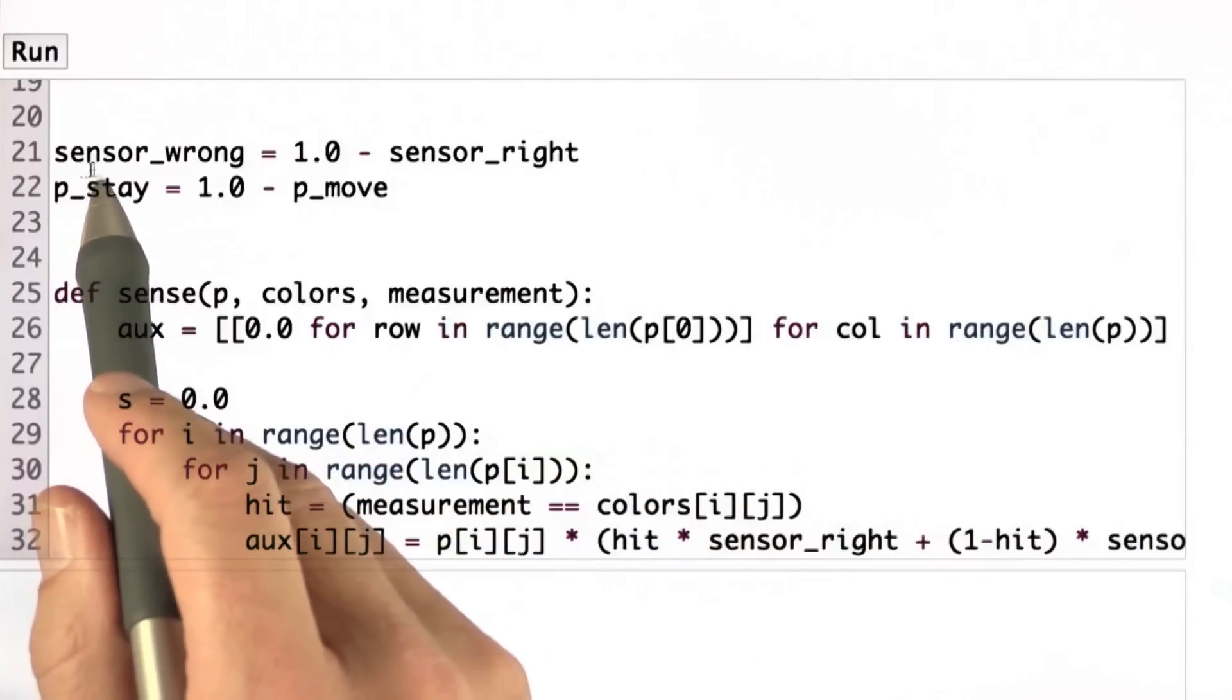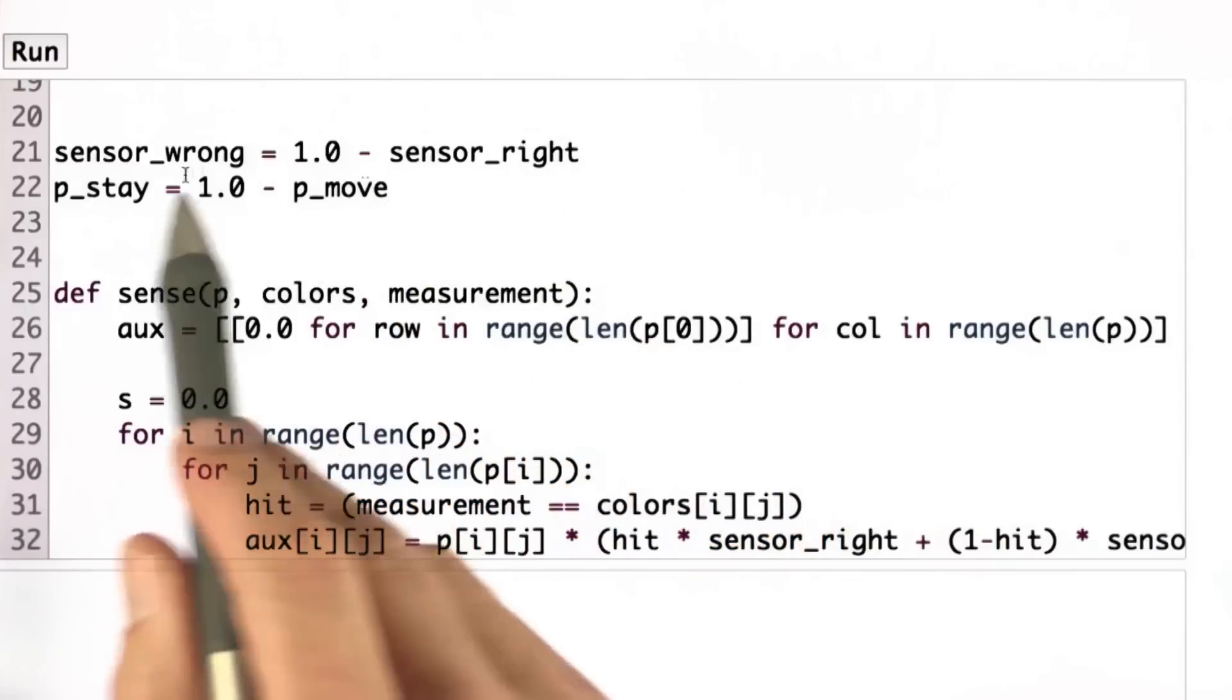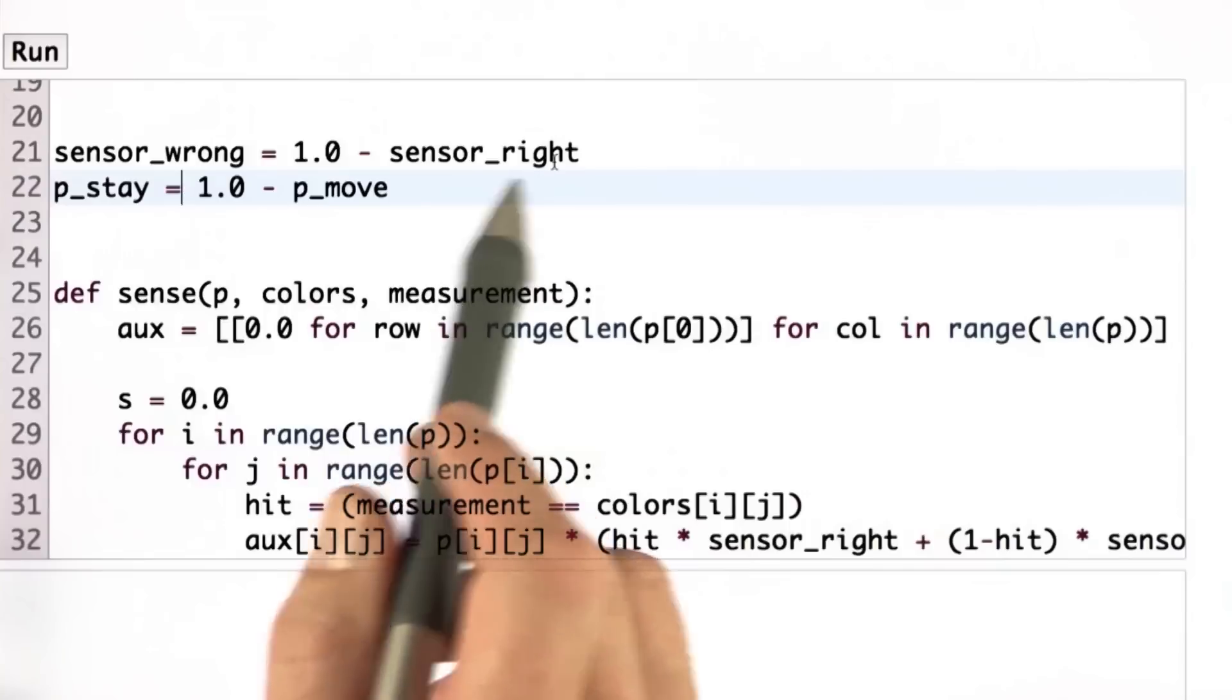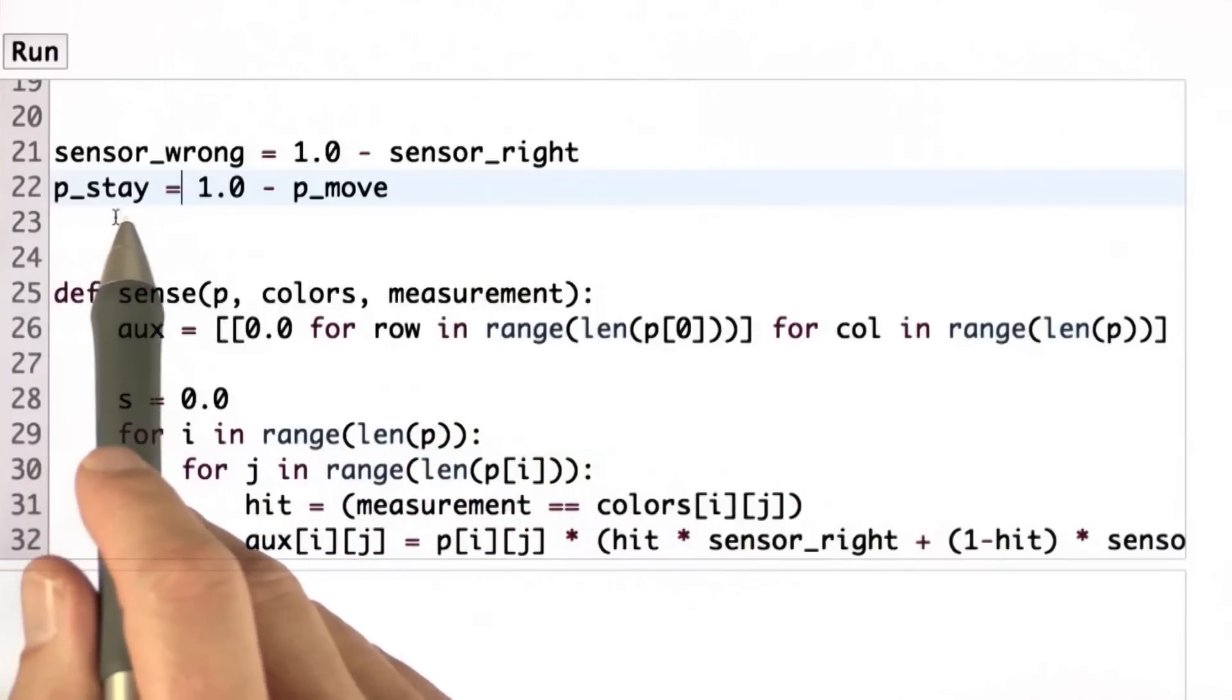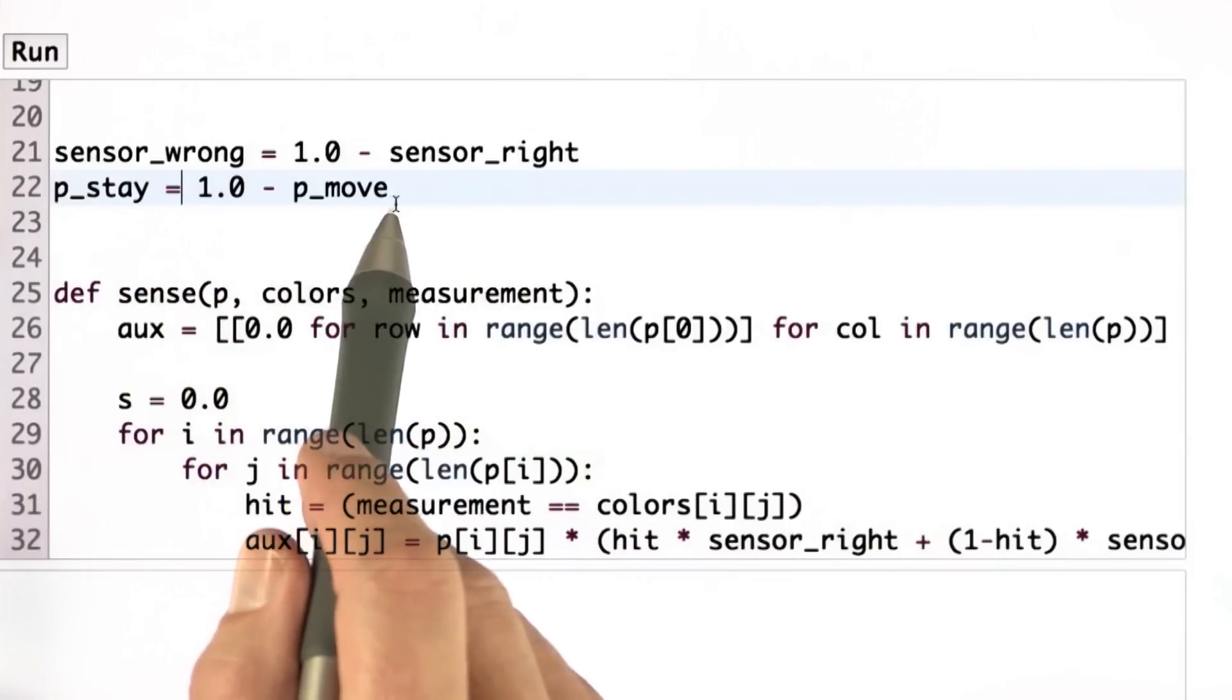First, I did two simple bookkeeping assignments. I assigned a value to sensor_wrong as 1 minus the probability of sensor_right and a probability of staying, that is a motion failure, as 1 minus the probability p_move.